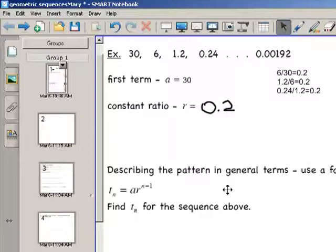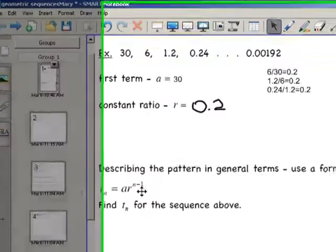Once, as mathematicians, we've seen a pattern, we try to define it with a formula. For a geometric sequence, the general term is the first number multiplied by the constant ratio to an exponent, and it's n minus 1 exponent. Because to get to 6, which is term 2, we only multiply the 30 by 1, 0.2. So we have now defined a general formula, which of course you will memorize.